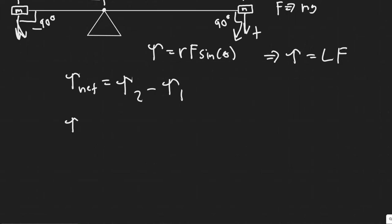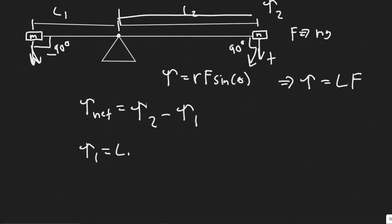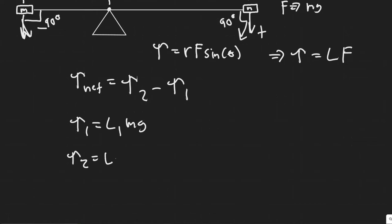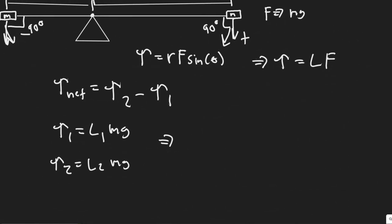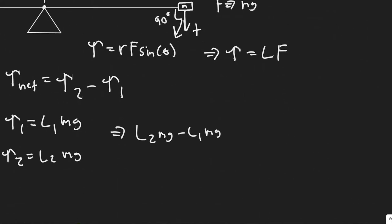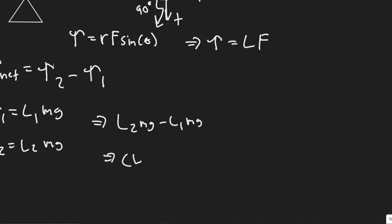So T1 equals L1 times mg, and T2 equals L2 times mg. The net torque is therefore T2 minus T1, which equals L2·mg minus L1·mg. Factoring out mg, we get the net torque equals (L2 minus L1) times mg. That's your net torque.